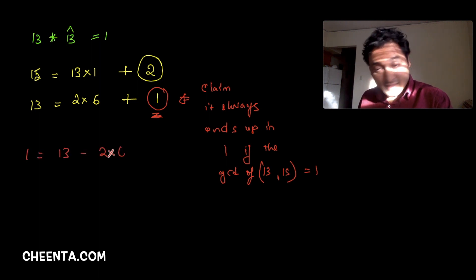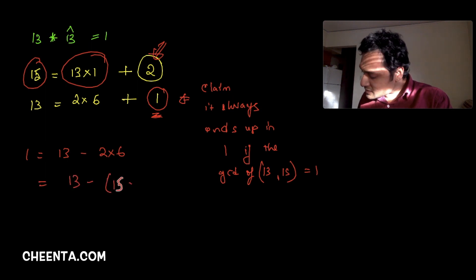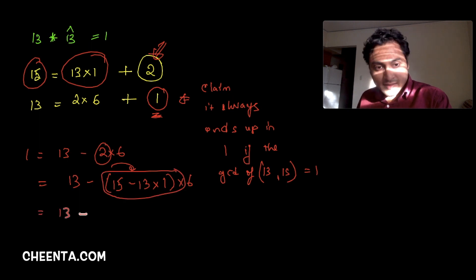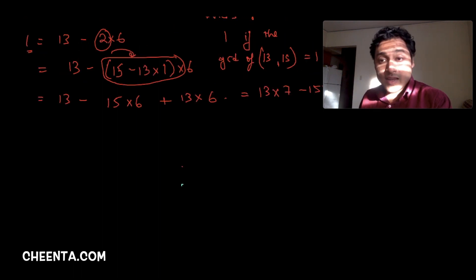Then we will replace this 2 by 15 minus 13 times 1. So 2 is this. This is equal to 13 minus (15 minus 13 times 1) times 6. I just replace this 2 by this quantity. So this is 13 minus 15 times 6 plus 13 times 6. So this is 13 times 7 minus 15 times 6. That's what 1 is about.